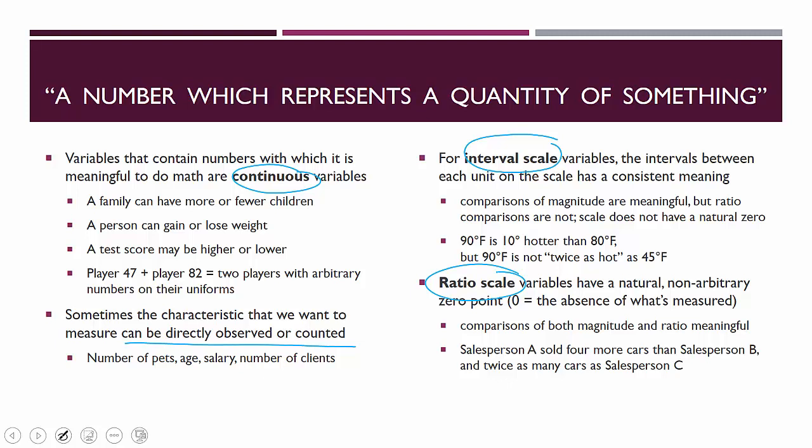On the Kelvin scale, ratio comparisons make sense. Kelvin is sort of an abstract notion, but if you think about sales: salesperson A sold four more cars than salesperson B — those magnitude comparisons make sense — and it's also true that salesperson A may have sold twice as many cars as salesperson C. If you sell zero cars, we know what that means: zero is a natural zero point.